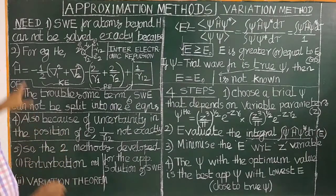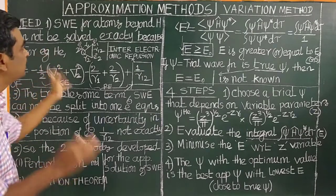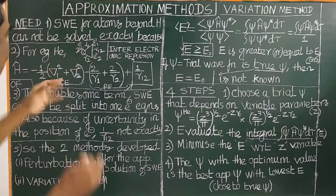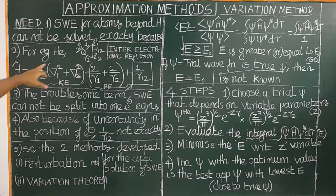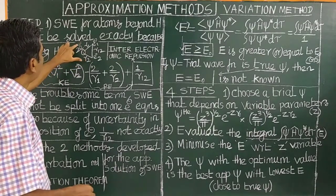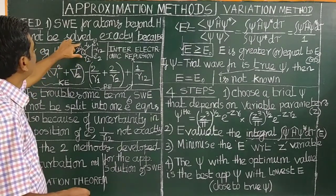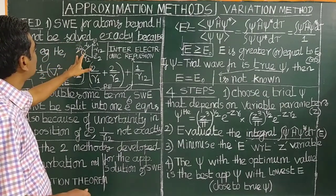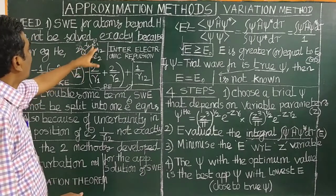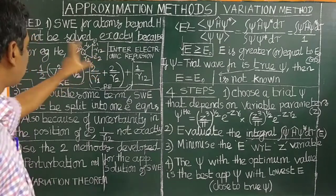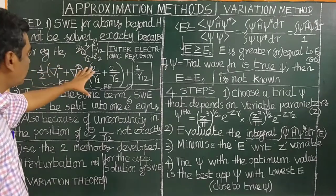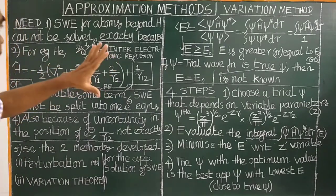What is the reason? For example, consider the helium atom. The helium atom nucleus has two protons and neutrons, so the charge on the nucleus is 2e+. There are two electrons present in helium.